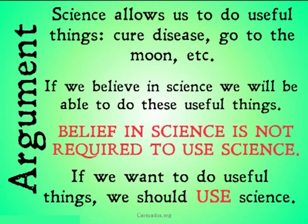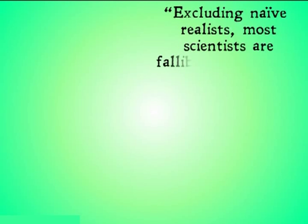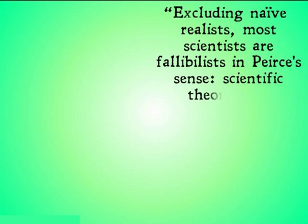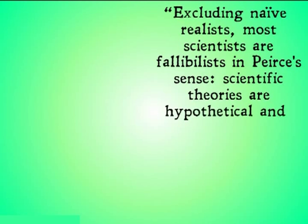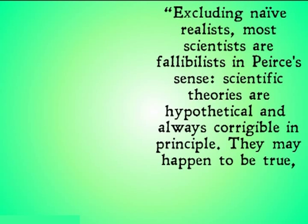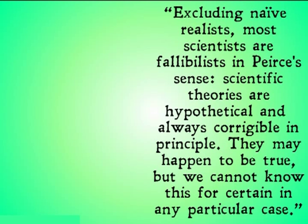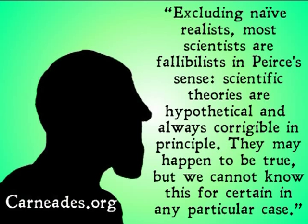I'll leave you with a quote from the Stanford Encyclopedia of Philosophy on these positions. Excluding naive realists, most scientists are fallibilists in Peirce's sense. Scientific theories are hypothetical and always corrigible in principle. They may happen to be true, but we cannot know this for certain in any particular case. Watch this video and more at carneades.org, and stay skeptical, everybody.